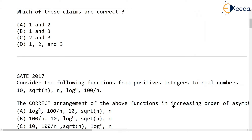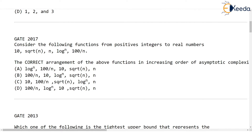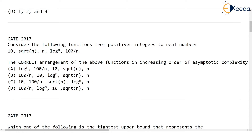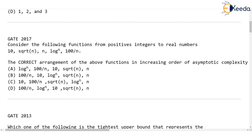Let's go on to the other question asked in GATE 2017. In GATE 2017, they have given us some functions from positive integers to real numbers. Here n in each of these functions is a positive integer, and the function maps positive integers to real numbers — because for example 100/n where n is an integer results in a real number. So all these given functions are from positive integers to real numbers.